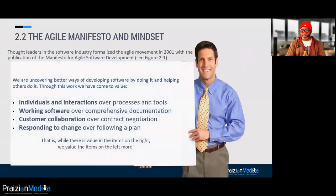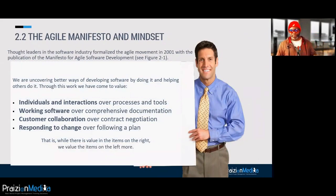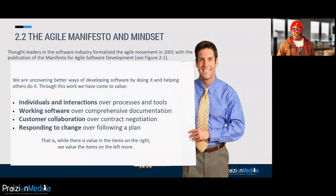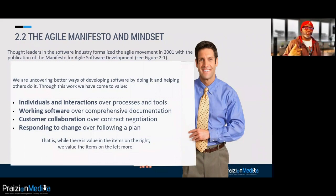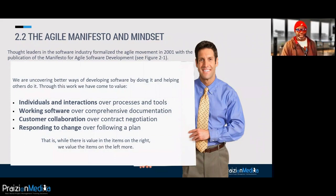The Agile Manifesto is talked about in this book. We've got four values. Value individuals and how they interact more than processes and tools. Value working software over comprehensive documentation. Value customer collaboration over contract negotiation, and value responding to change over following a plan. You can find the full manifesto at agilemanifesto.org.